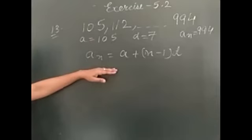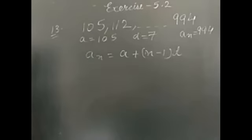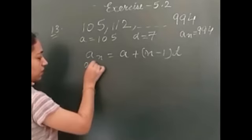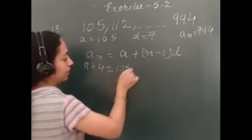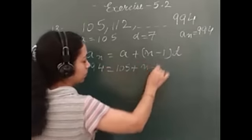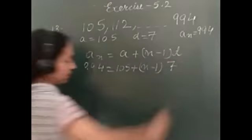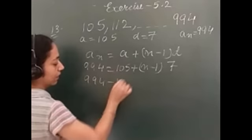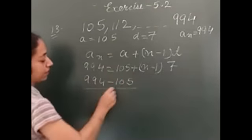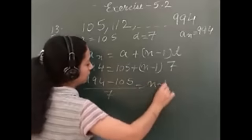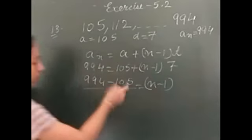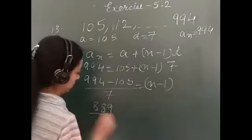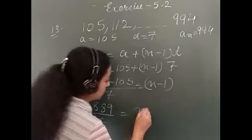So, now we have to put all these values here and we have to find out the value of n. Yes, everybody, please do the question. 994 equals 105 plus n minus 1 multiplied by 7. Simplify this. And you will get the value of n to be... if you subtract 105, 7 will come down. This will be equal to n minus 1.